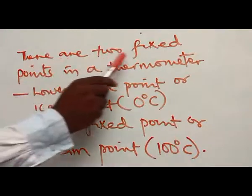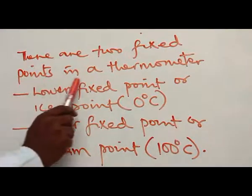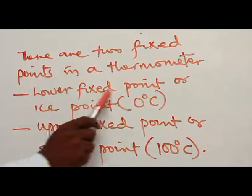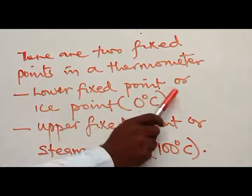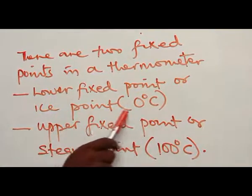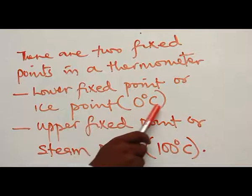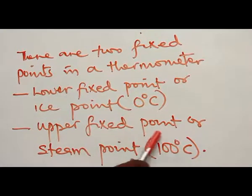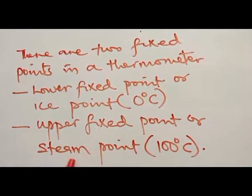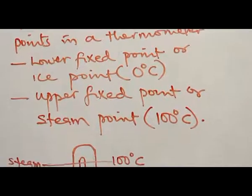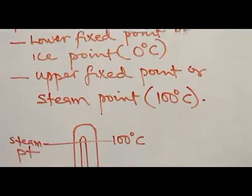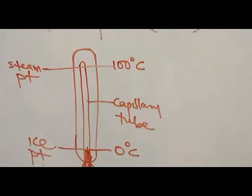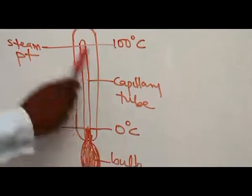There are two fixed points in a thermometer. The lower fixed point, also called the ice point, is 0 degrees Celsius. The upper fixed point, or steam point, is 100 degrees Celsius. This is illustrated in the liquid-in-glass thermometer.